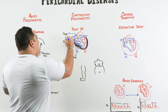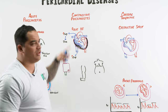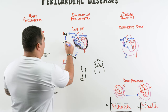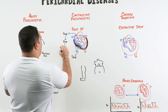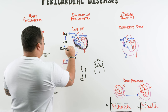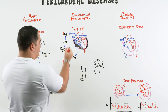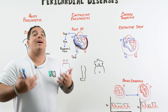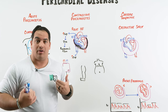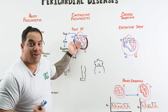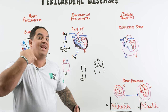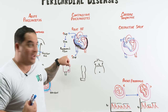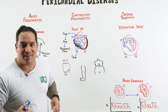Patients with constrictive pericarditis can also exhibit Kussmaul's sign — a variant of JVD. Normally, inspiration drops intrathoracic pressure and sucks blood into the right heart. But when the right heart is compressed, it can't fill during inspiration, so the JVD stays distended rather than collapsing — a paradoxical distension during inspiration. This is Kussmaul's sign, also seen in restrictive cardiomyopathy.